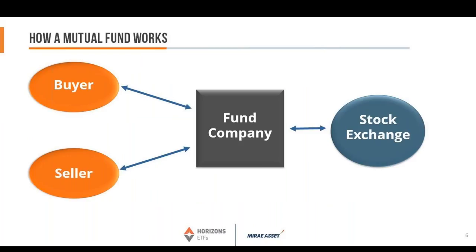Here's how a mutual fund works: a buyer goes to the fund company, who then goes to the stock exchange to create the units. When a seller comes in, they sell to the fund company, who has to go sell the stock on the stock exchange to get the cash to pay the seller. That's the graphic description of the process. Now let's look at how an ETF works.